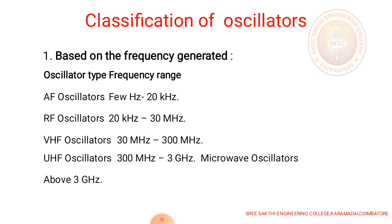Classifications of oscillators based on the frequency generated. Oscillators are classified into many types: AF oscillator, that is audio frequency oscillators; RF oscillator, radio frequency oscillators; very high frequency oscillators; ultra high frequency oscillators.